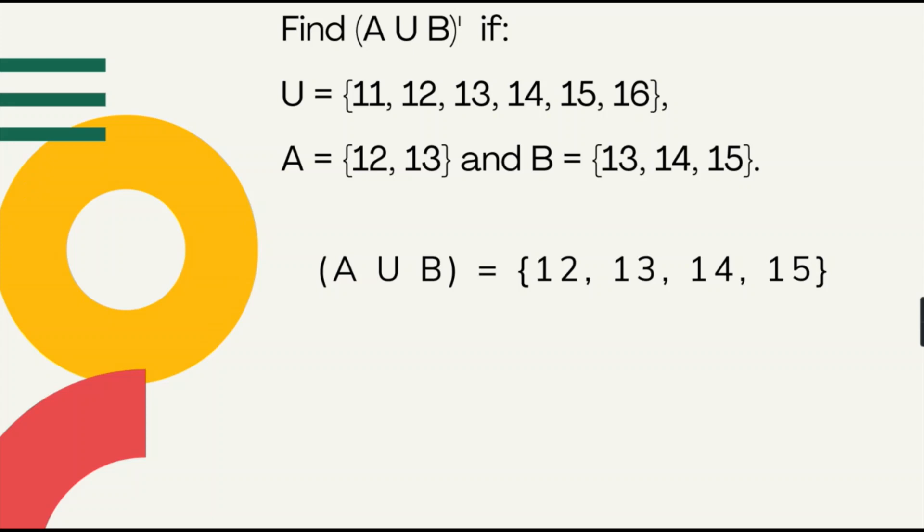First thing to do here is we're going to figure out the A union B. In the previous videos, we learned about how to get the union of two or more sets, in which we only have to list down the elements from each of the given or required sets. In this case, the A union B is equal to 12, 13, 14, 15.